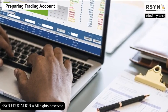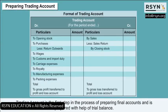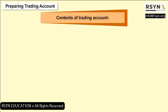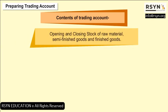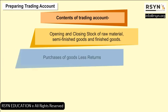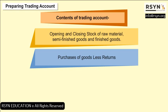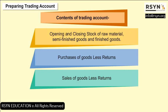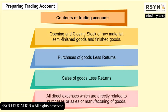Preparing Trading Account: The trading account is the first step in the process of preparing final accounts and is prepared with the help of a trial balance. Contents of the trading account include: opening and closing stock of raw material, semi-finished goods and finished goods; purchases of goods less returns; sales of goods less returns; and all direct expenses which are directly related to purchases, sales, or manufacturing of goods.